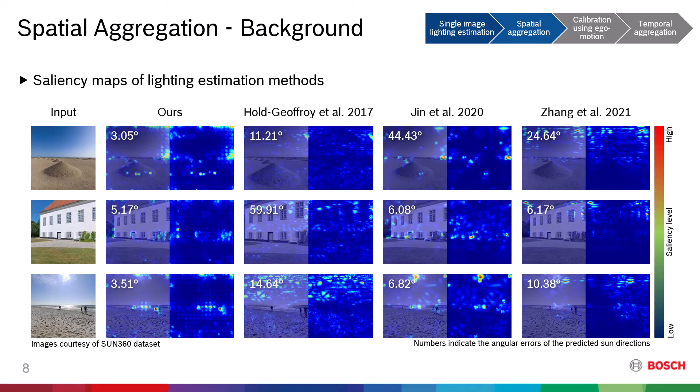Our spatial aggregation design is based on the analysis of various lighting estimation methods. Here you can see three outdoor images, the overlaid images, and the salience maps in four column blocks, which correspond to our method and three previous methods. Red regions on the maps indicate the pixels contributing the most and blue the least to the network's outcome during lighting inference. We found that all lighting estimators can estimate the lighting condition on small localized image features.